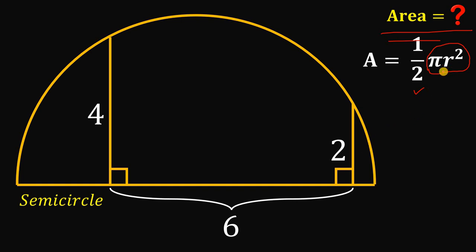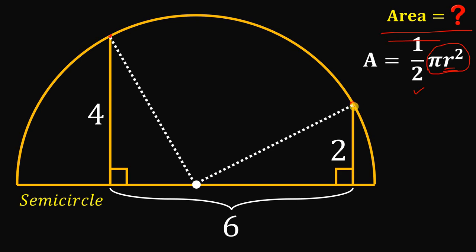The important thing here is we need to find the value of r, or simply r squared. To answer this question, what we're going to do is locate first the center of this semicircle. We know from this point to this point — the center of the circle — the measure of this segment must be equal to the radius of this semicircle. Since all radii are equal, this other segment is also r.